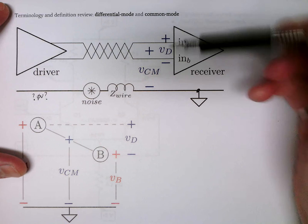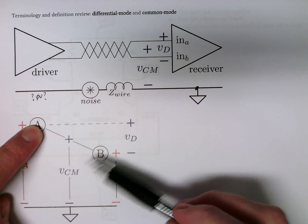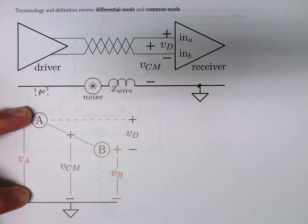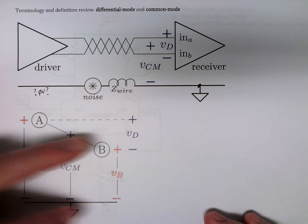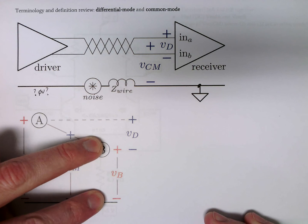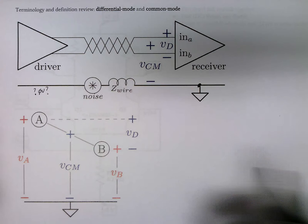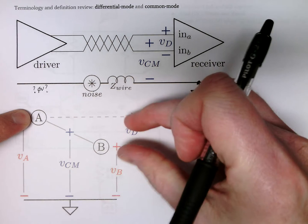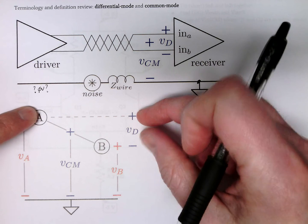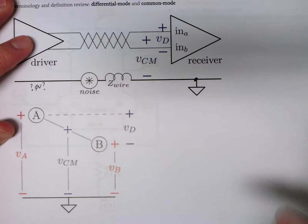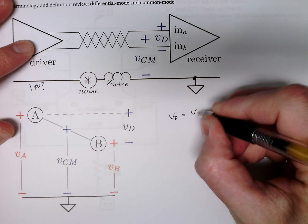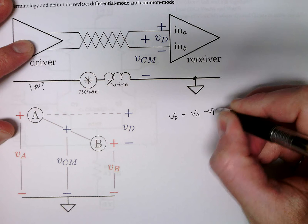We can define two terms. Looking at this figure, I have two nodes — two wires, A and B. We talk about node voltages: VA and VB, which is just the voltage between that node and zero — the normal node voltage you're used to. We can also take the difference between these two, notated VD, called the differential mode voltage. It's simply VA minus VB.